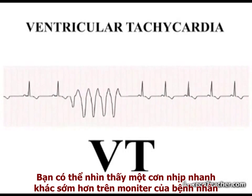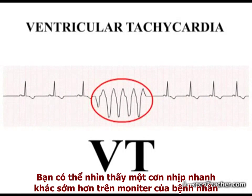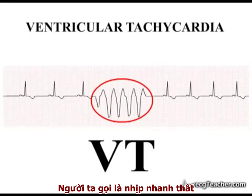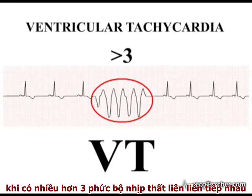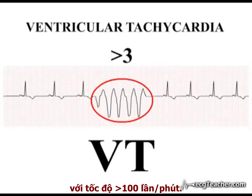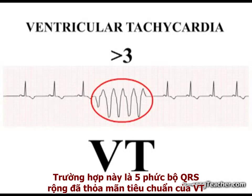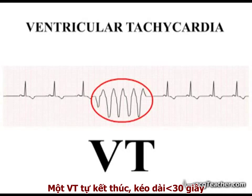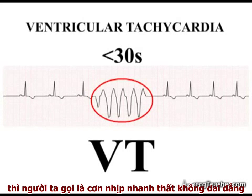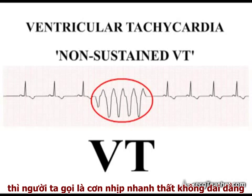You may have spotted this earlier event on the patient's monitor. Ventricular tachycardia is present when more than three consecutive ventricular complexes occur at a rate of greater than 100 beats per minute. This run of five broad complex beats meets this definition of VT. Such a self-terminating run of VT less than 30 seconds in duration is referred to as a salvo of non-sustained VT.